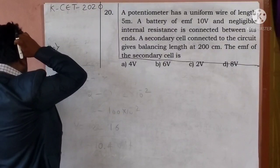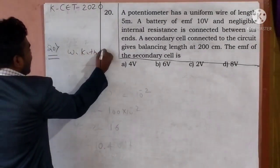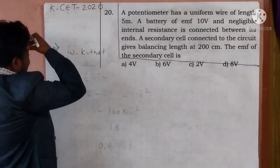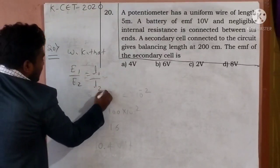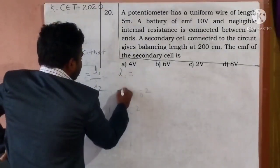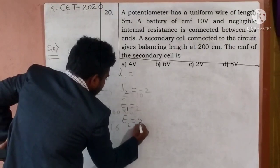Question number 20. Question number 20. In calculation, potentiometer question. We know that ideally, E1 upon E2 is equal to L1 upon L2. Do you remember? Yes.